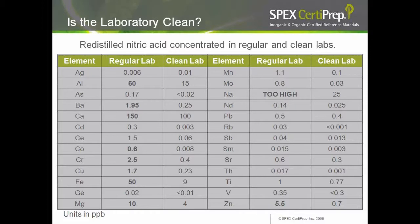Is my laboratory clean? To demonstrate, we concentrated redistilled nitric acid in regular and clean labs and then analyzed it. A regular lab follows GLP protocols, maintains good housekeeping, and is kept spotless — clean in an ordinary sense. However, a clean lab is one constructed with high-quality special materials and special air handling systems. As you can see, contamination from aluminum, calcium, iron, sodium, and zinc from a regular lab is much higher than from a clean lab.